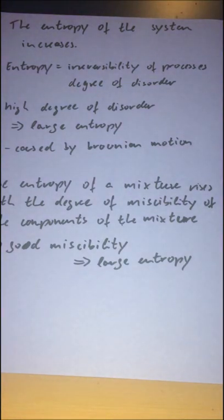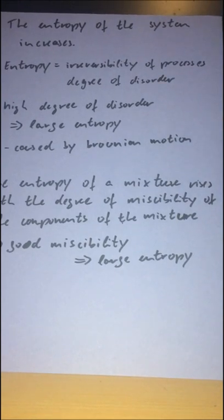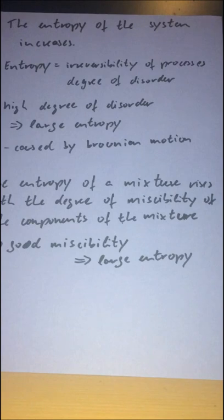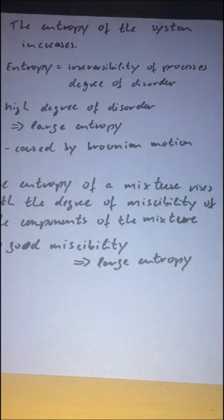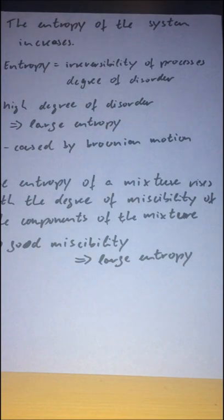The answer is the entropy of the system increases. Entropy is the irreversibility of processes and the degree of disorder. So a high degree of disorder is a large entropy, and this is caused by Brownian motion. The entropy of a mixture rises with the degree of miscibility of the components of the mixture. So good miscibility leads to large entropy.